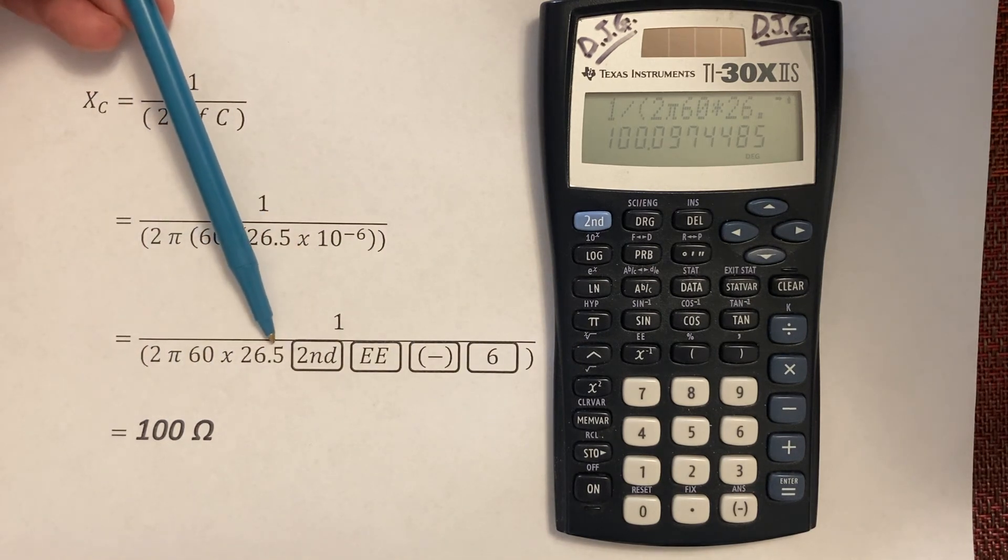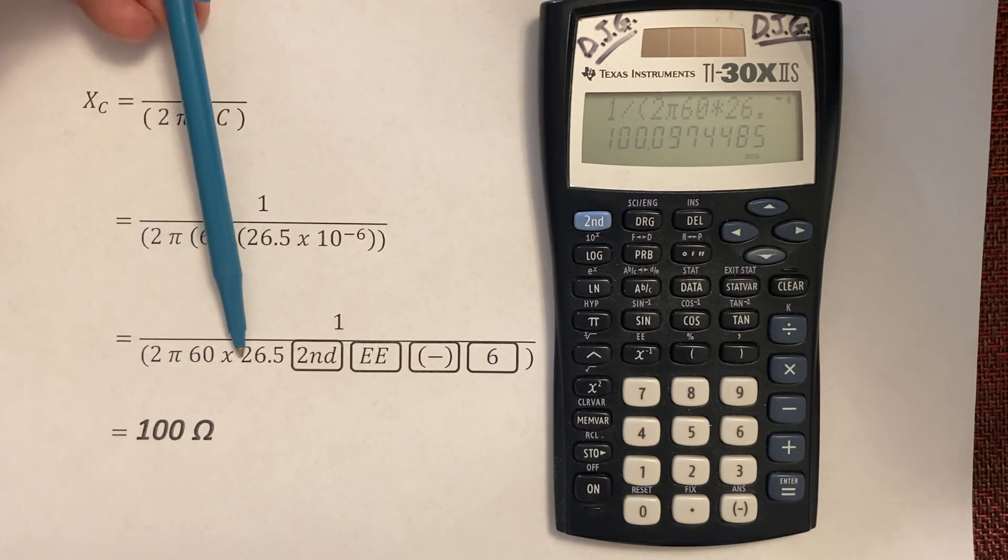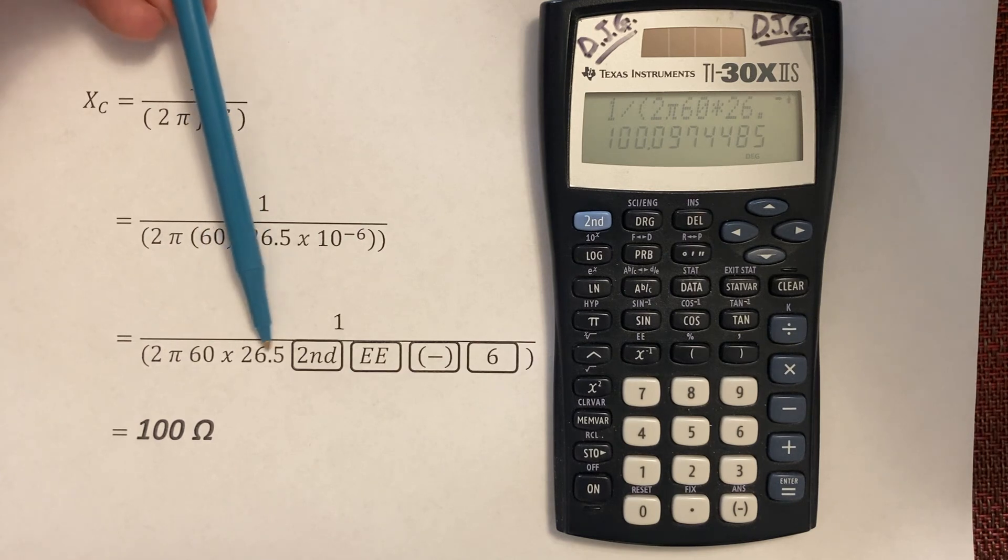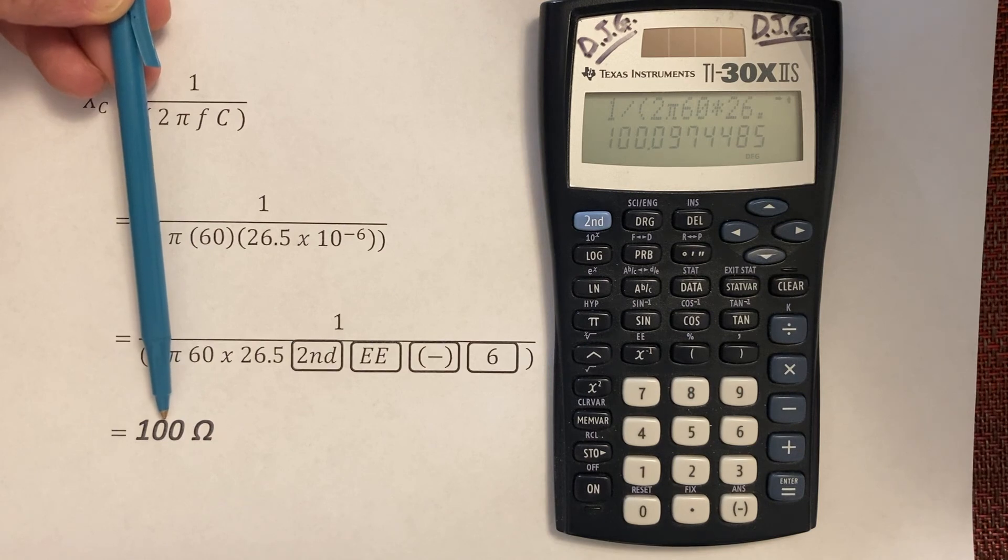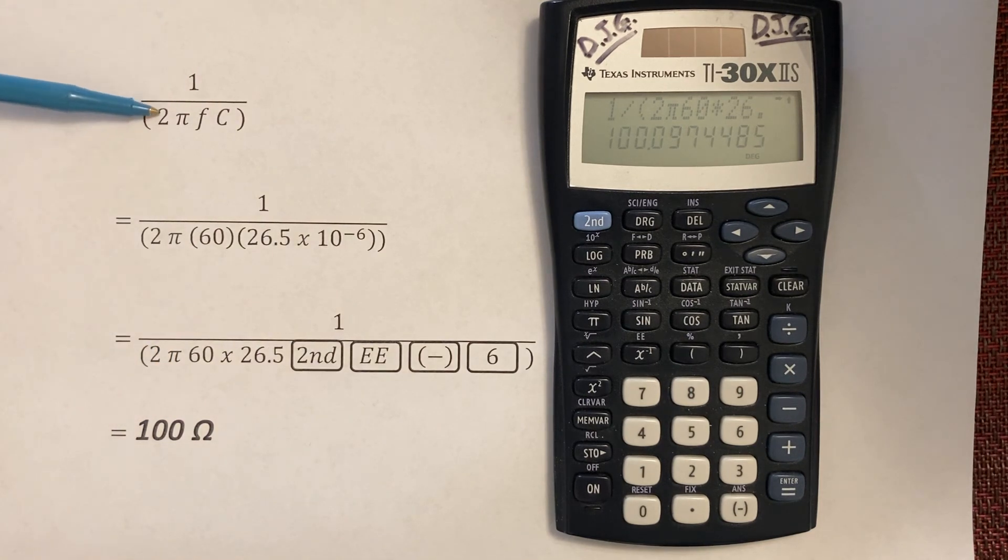And a hundred. When we had 53 microfarads we got 50 ohms. When we have a smaller capacitance we get larger ohms. And that's the way it works: when the denominator gets smaller, even smaller, the result becomes larger.